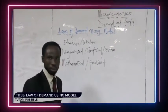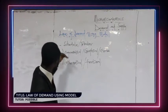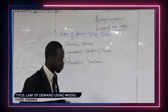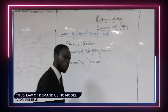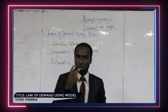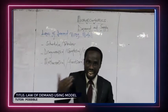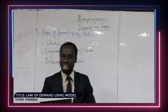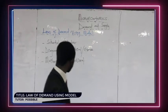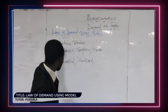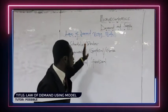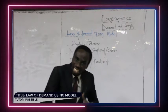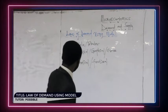Having understood the model and the theory, we are going to look at the model form of the law of demand, using a table first. Before that, you need to understand two concepts: the types of demand. The first type is individual demand and the second is market demand. The demand schedule for individual demand will be different from the demand schedule for market demand.